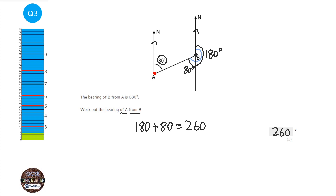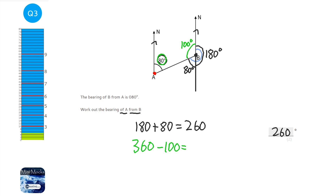There are other ways of doing it. You could work out the co-interior or allied angles - the 80 degrees and that angle add up to 180, so that one is 100. Then do 360 take away 100, because the full circle is 360 and we don't want the 100. You'd also get 260.